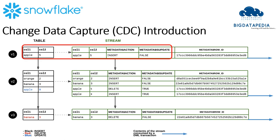In this picture we have a table with two columns — column 1 and column 2. Column 1 has fruit names and column 2 has fruit values. At the beginning, when we insert data into the table, it will be reflected as metadata action 'insert' and is_updated as false, because only an insert happened — no update was happened.